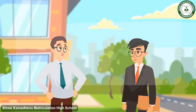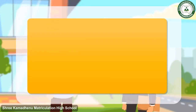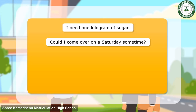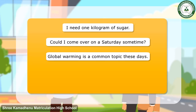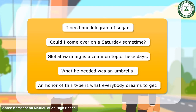Here are a few more examples of sentences with a, an, and one: I need one kilogram of sugar. Could I come over on a Saturday sometime? Global warming is a common topic these days. What he needed was an umbrella. An owner of this type is what everybody dreams to get.